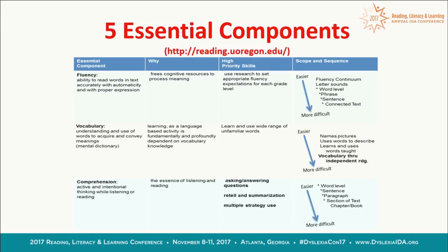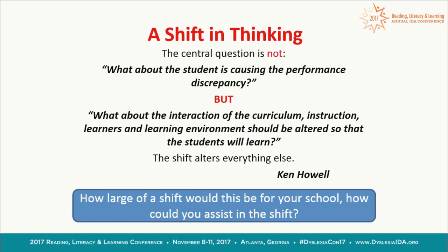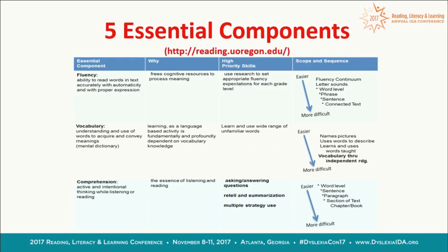Vocabulary means not only sight words but academic vocabulary. Comprehension is probably the hardest because there are so many different skills. If you don't know the Center on Instruction, they have a free downloadable document on informational text structure with graphic organizers and signal words for each text structure type — compare and contrast, sequencing, persuasive. It's called the Informational Text Structure Template, and you can find it at centeroninstruction.org.